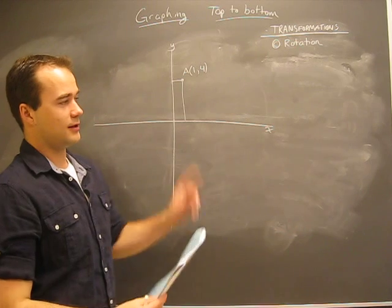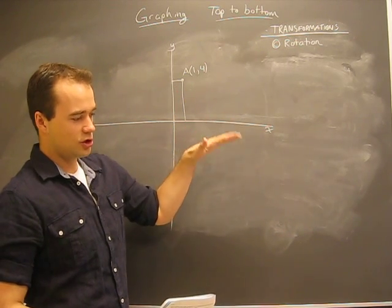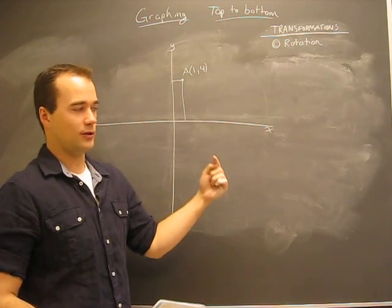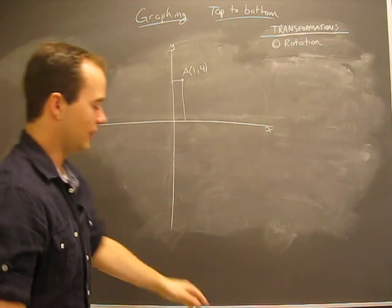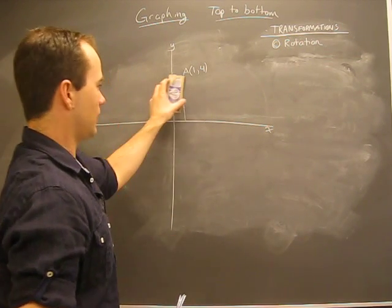A clock has an arm that rotates in a circle. So rotations, think about it like you're going to take something and rotate it.